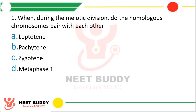Question 1: When during meiotic division do the homologous chromosomes pair with each other? Option A: Leptotene. Option B: Pachytene. Option C: Zygotene. Option D: Metaphase 1. The correct answer is Option C, zygotene. In prophase 1, there are 5 stages: leptotene, zygotene, pachytene, diplotene, and diakinesis. In the zygotene stage, the pairing of homologous chromosomes — called synapsis — occurs.